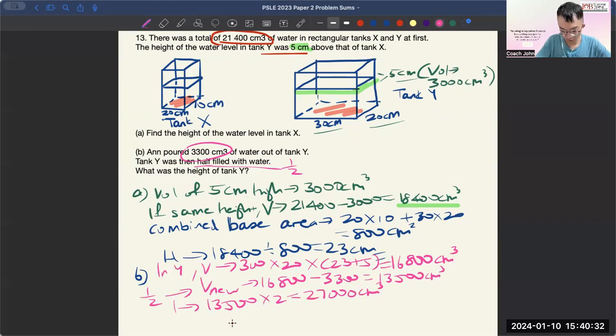And then, with your height, you can use volume over length times breadth. So, divide by 30 times 20 to give you 45 cm, and that is your answer. That's all.